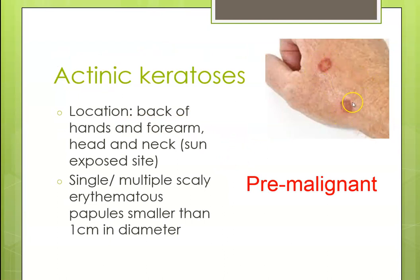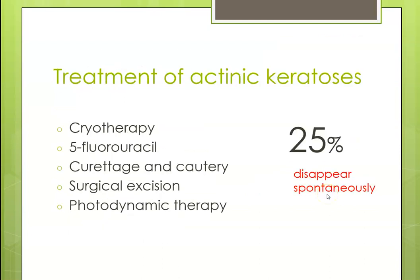Actinic keratosis is usually found on the back of the hands, forearms, head, and neck — areas with sun exposure. It presents with multiple or single scaly erythematous papules, usually less than 1 cm in size, and it is a pre-malignant condition. One-fourth will disappear spontaneously; if persistent, cryotherapy or other options can be chosen.